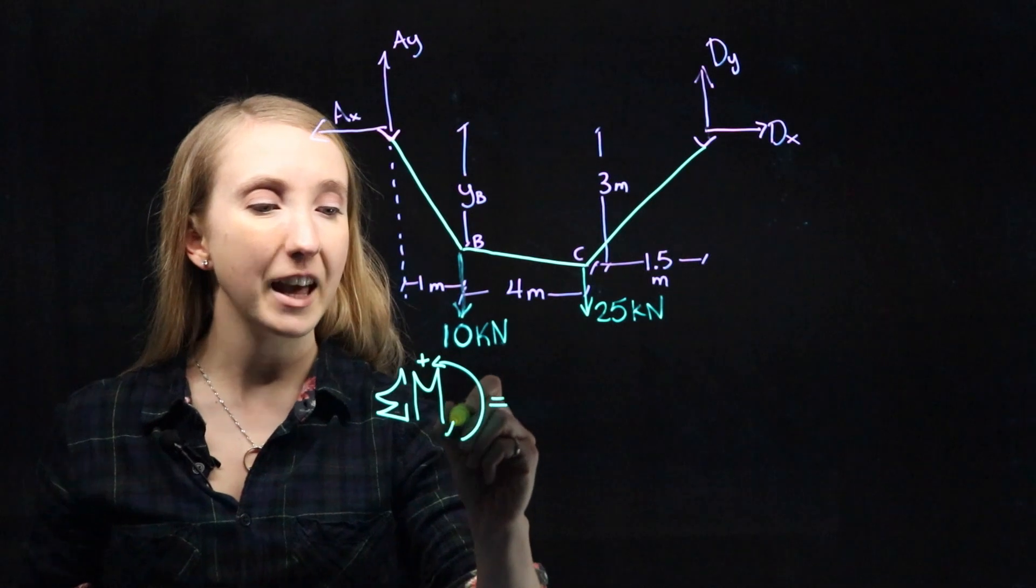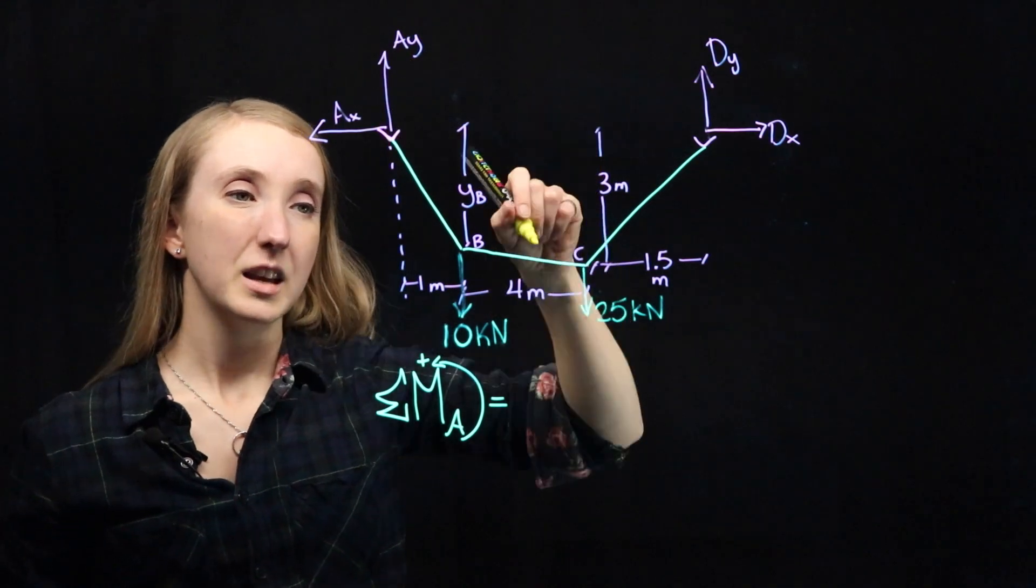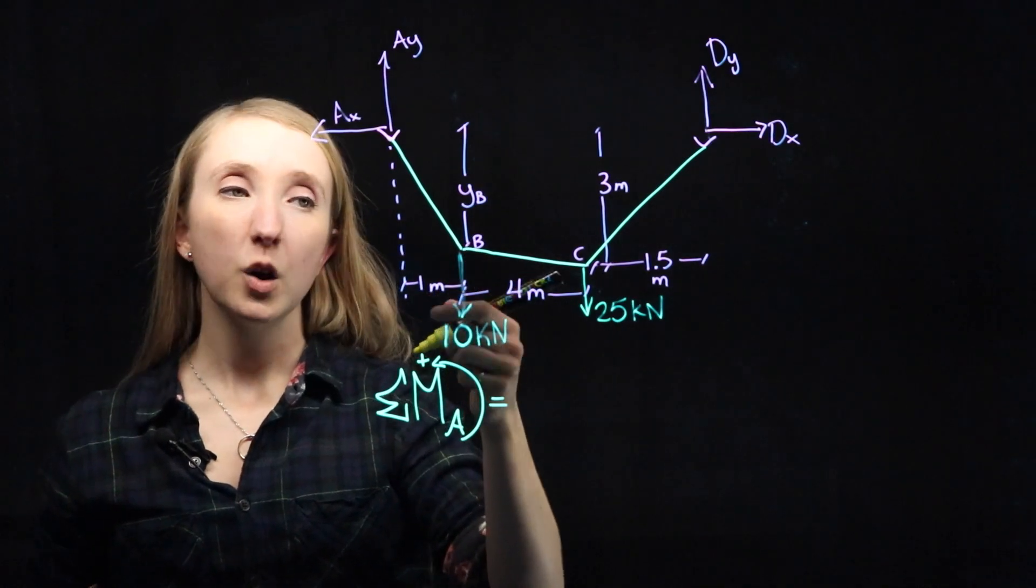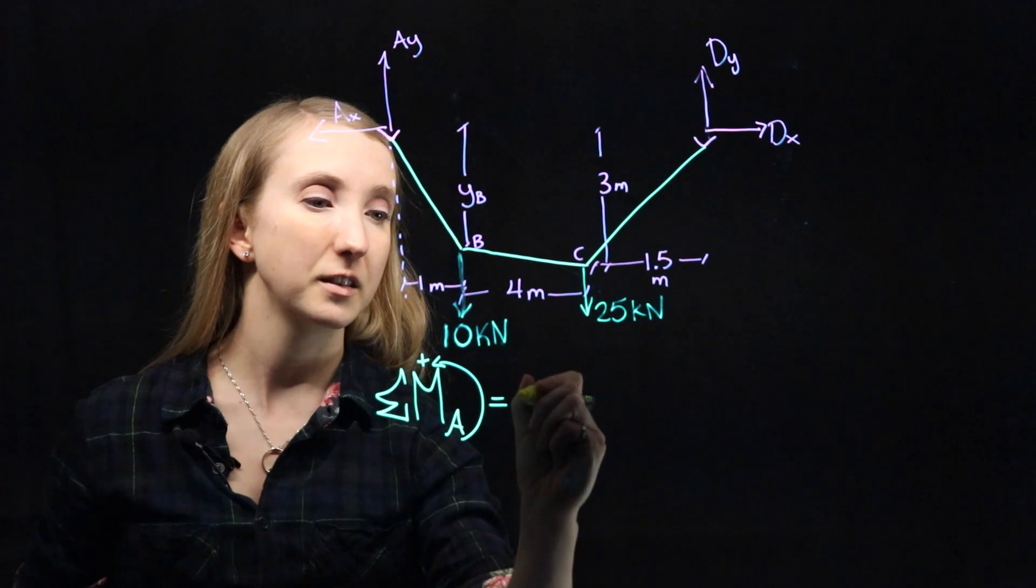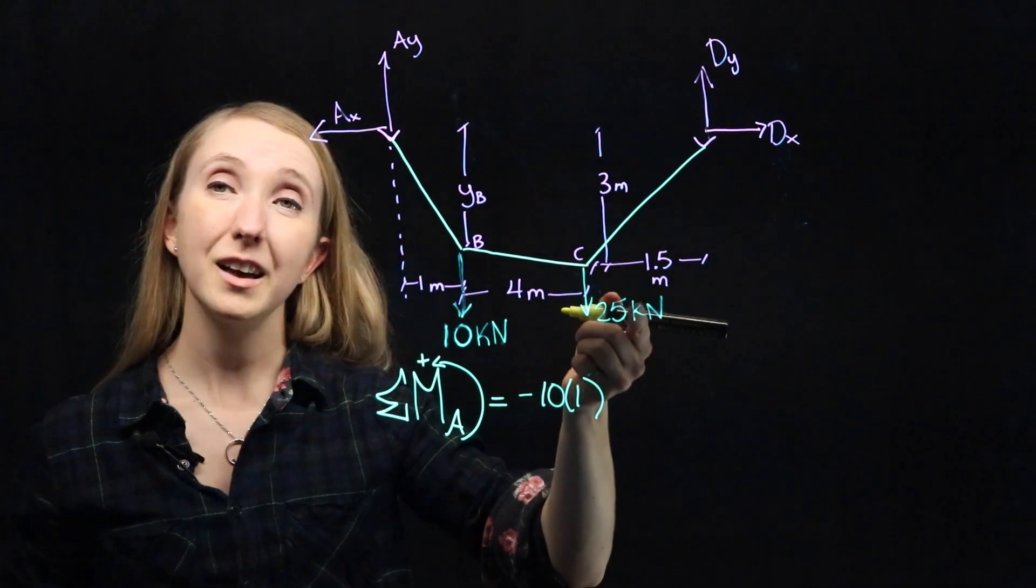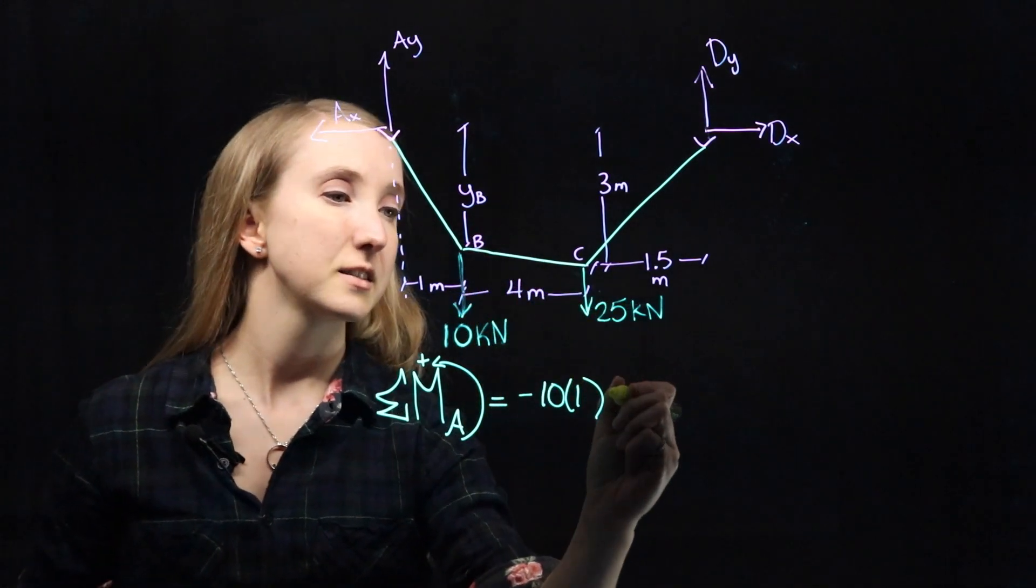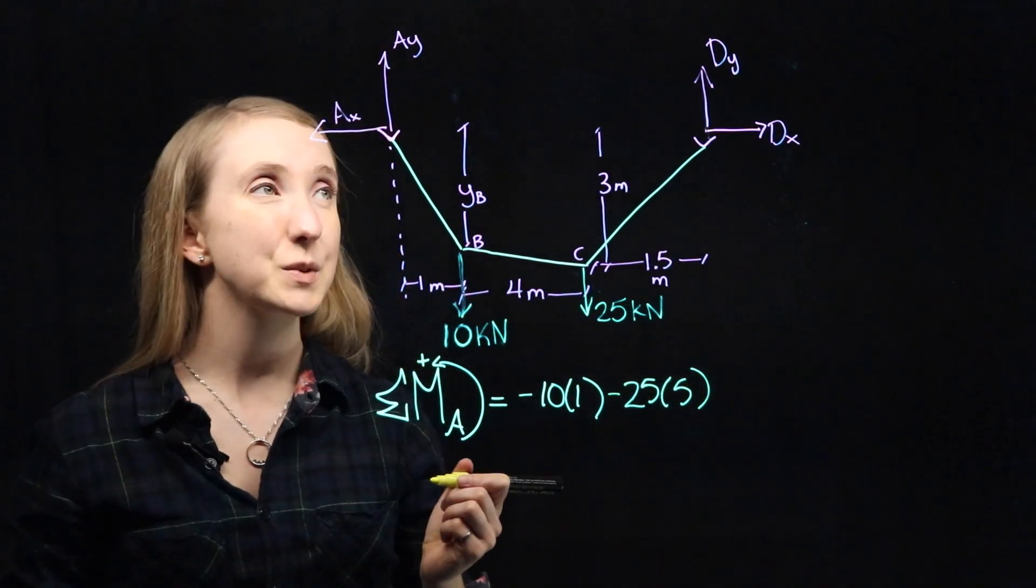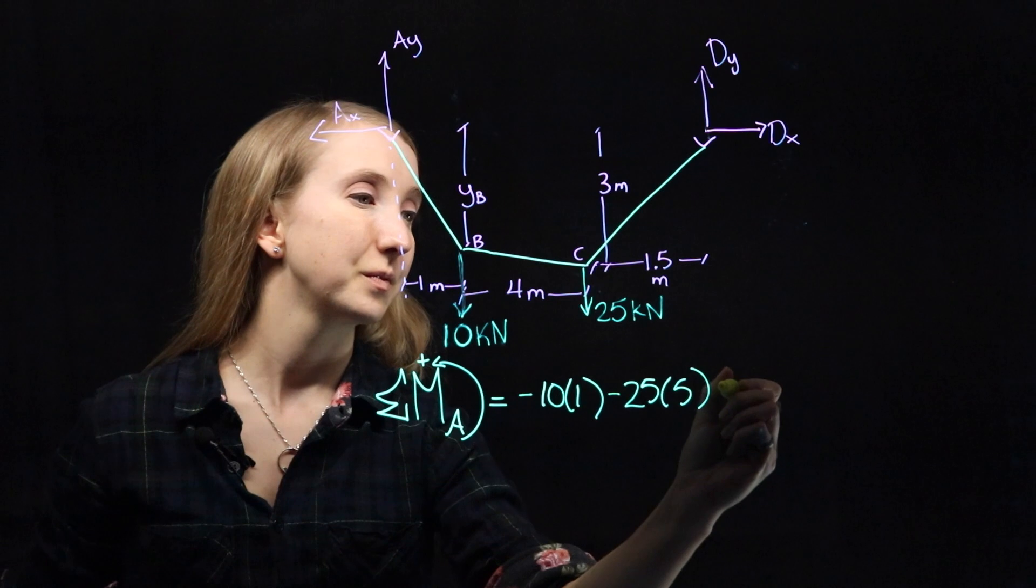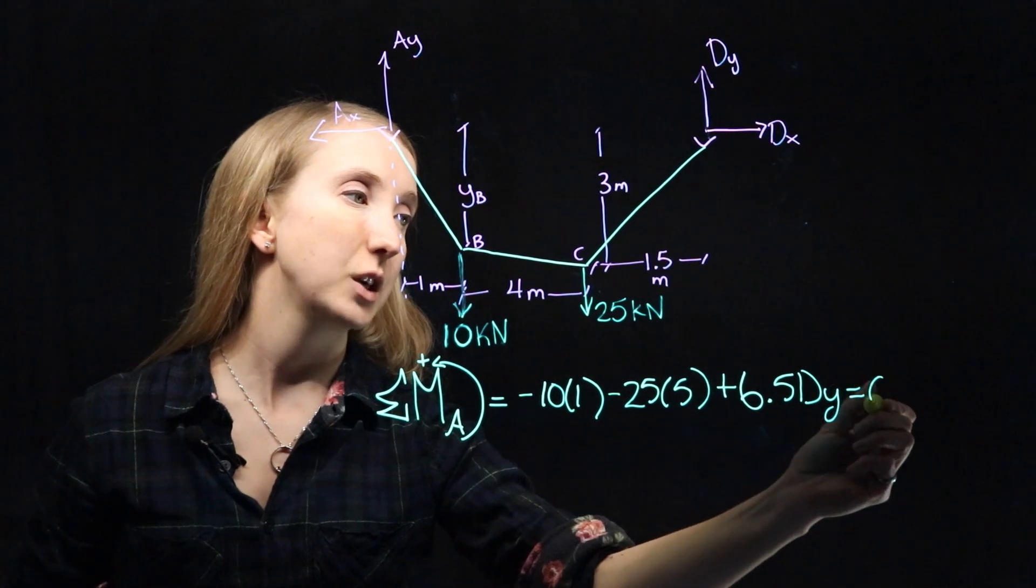Let's find the moment about A. Our positive direction is anything that's going to make it rotate this way. So we have a force of 10 kilonewtons times a moment arm of 1 meter, which is making it rotate in the negative direction. So negative 10 times 1. Then we have 25 kilonewtons in the same direction at a distance of 1 plus 4 meters. And last, we have DY acting at a distance of 6.5 meters. And that one is in the positive direction. And it will equal 0.